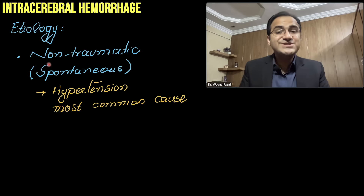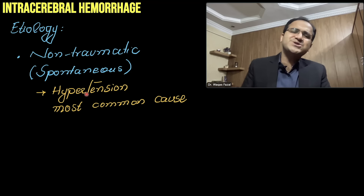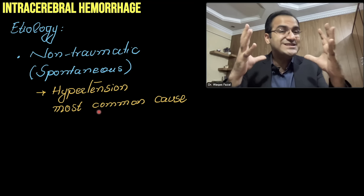The most common etiology of intracerebral hemorrhage is non-traumatic. Non-traumatic causes include spontaneous bleeds due to hypertension. Hypertension is the most common cause — elevated blood pressure causes rupture of vessels within the brain.